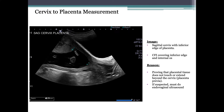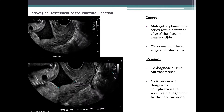If on trans-abdominal ultrasound the placenta appears low-lying or covering the cervix, an endovaginal scan should be done to confirm or disprove. The endovaginal assessment uses a mid-sagittal plane of the cervix with the inferior edge of the placenta clearly visible, always using colour flow imaging covering the inferior edge and internal os. The reason is to diagnose or rule out placenta previa or vasa previa, which is a dangerous complication requiring management by the care provider.